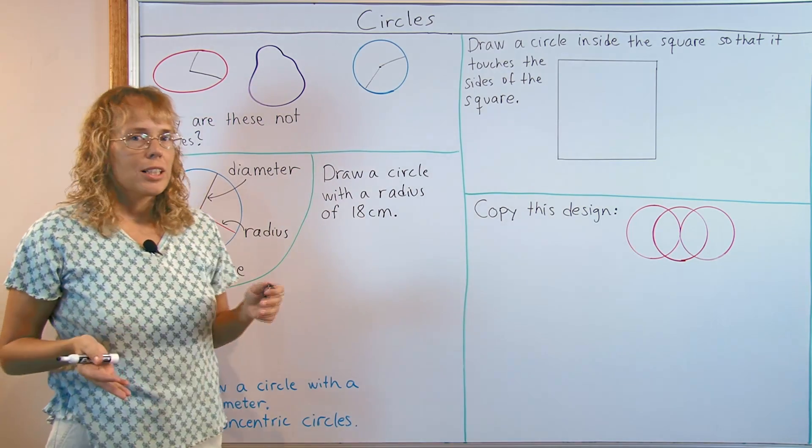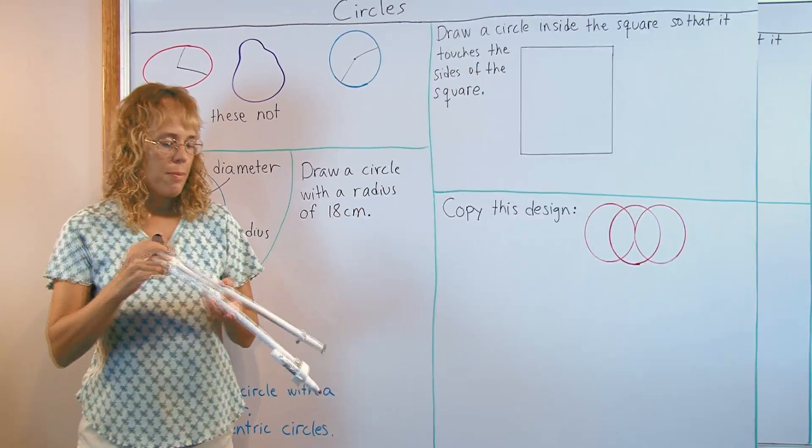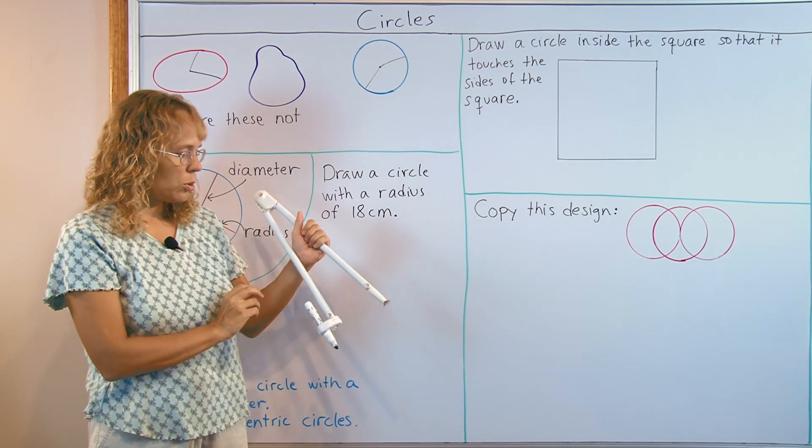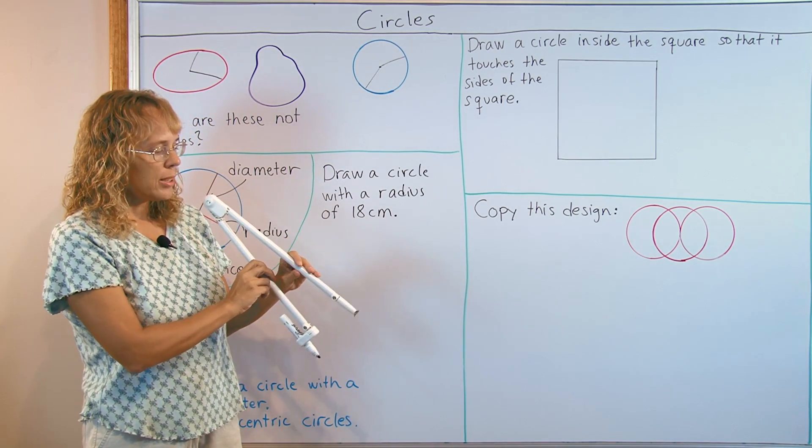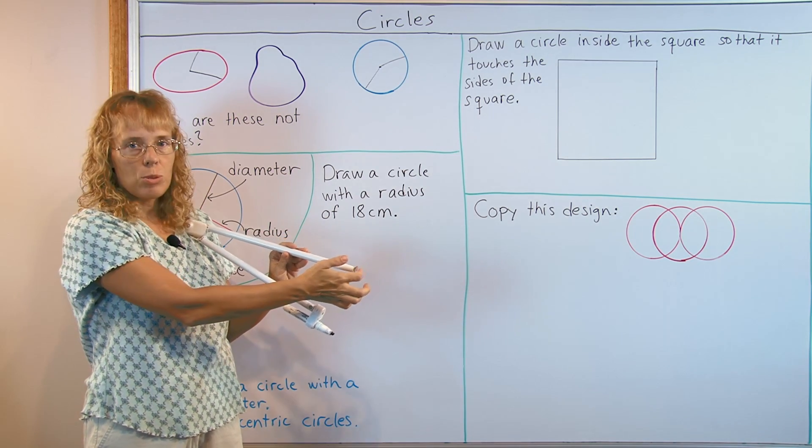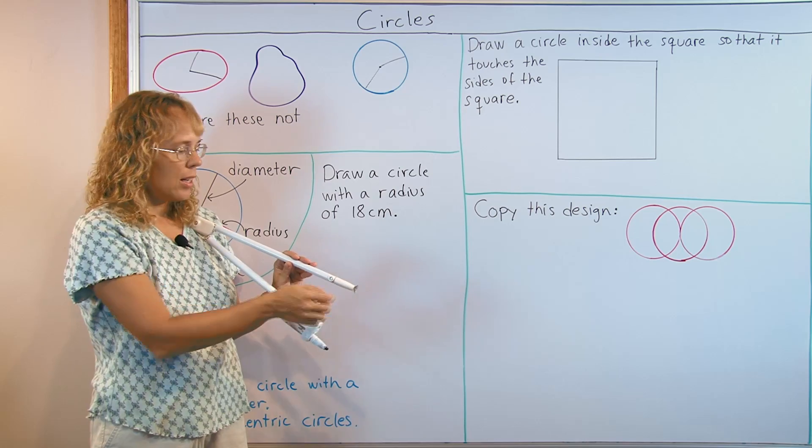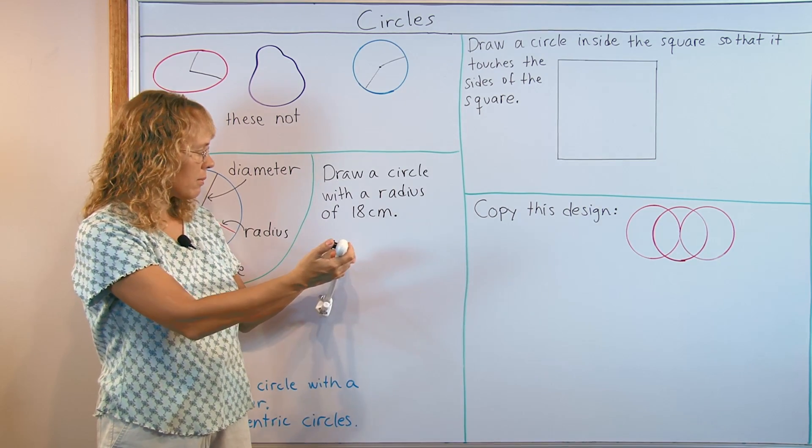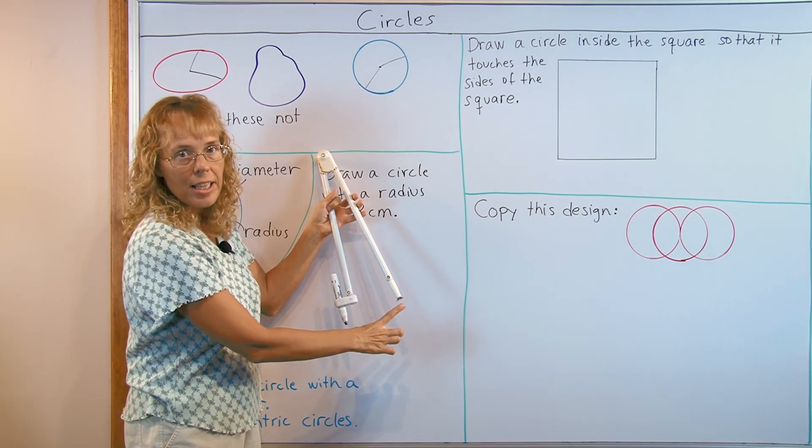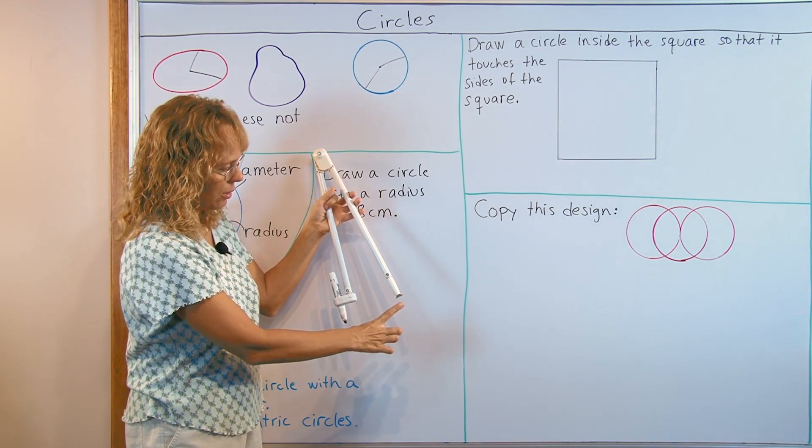So let's look at a compass. Now here I have a compass that's meant for whiteboard use. A compass that students will use are usually metal. They have a metal point here that you put on your paper. And this one has like a cup like that. This distance here is the radius of the circle.